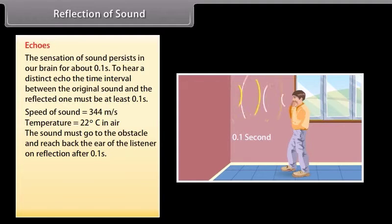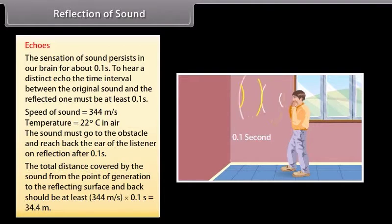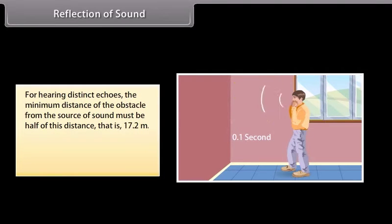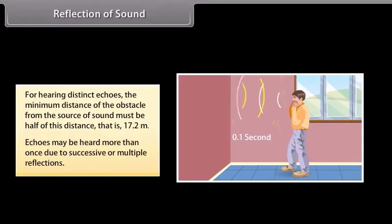Echoes. At a given temperature, say 22 degrees Celsius, in air the sound must go back to the obstacle and reach back the ear of the listener on reflection after 0.1 second. Hence, the total distance covered by the sound from the point of generation to the reflecting surface and back should be at least 344 meters per second into 0.1 second is equal to 34.4 meters. Thus, for hearing distant echoes, the minimum distance of the obstacle from the source of sound must be half of this distance, that is 17.2 meters. This distance will change with the temperature of air. Echoes may be heard more than once due to successive or multiple reflections.